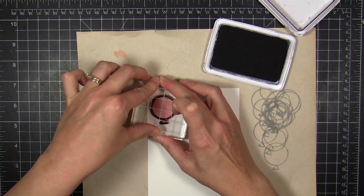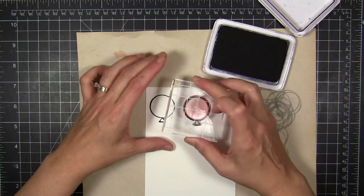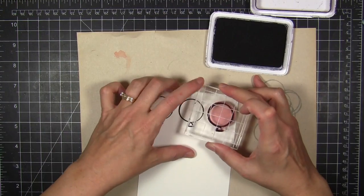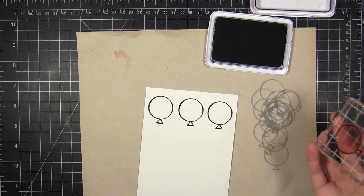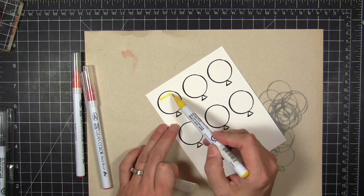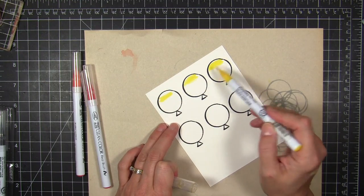I'm going to set that aside for a minute and take the same image, ink it up with the archival jet black, and stamp it onto the smooth side of some 140 pound Canson watercolor paper. I wasn't sure how many balloons I was going to need for this design, so I just stamped a whole bunch of them and then I'm going to watercolor them.